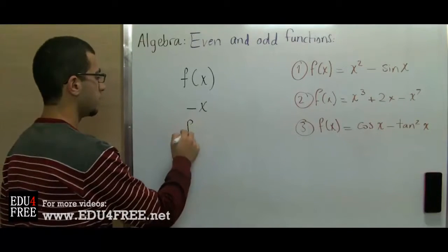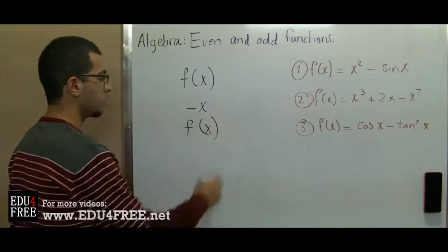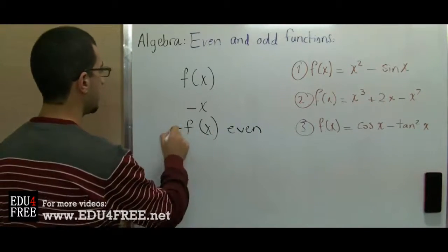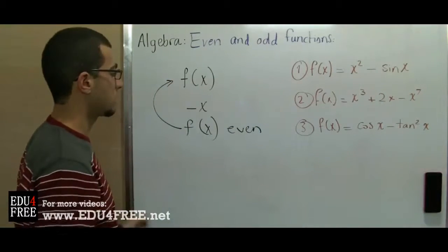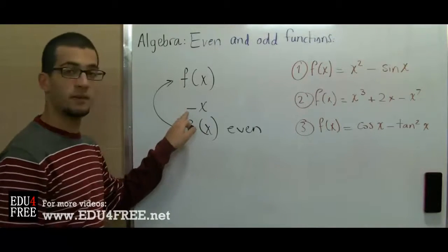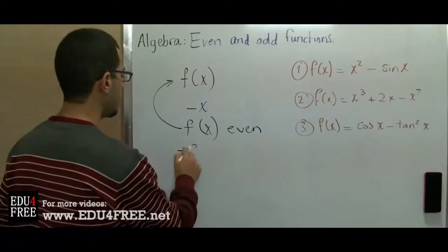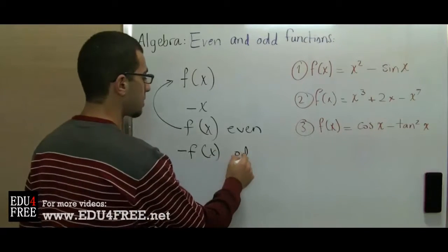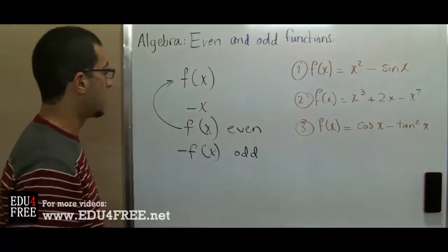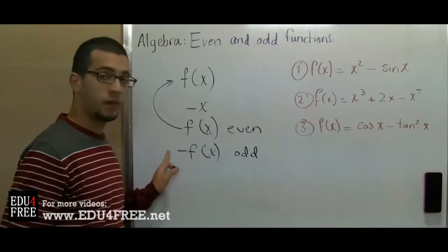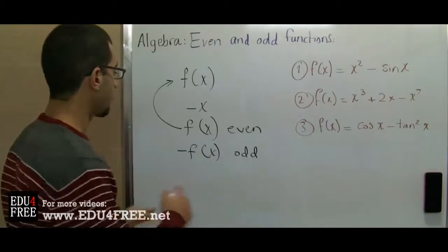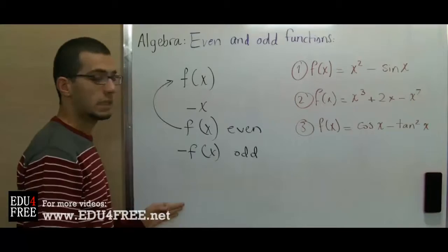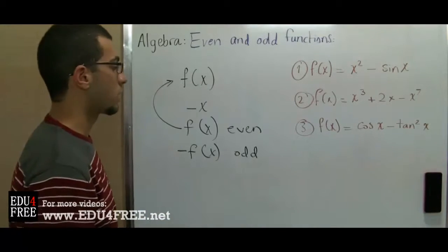If we plug in negative x and we get the same value as f(x), so the function is even. When we plug in negative x and we get the negative value of f(x), the function is odd. When we don't get either of these, then the function is neither even nor odd.